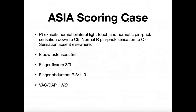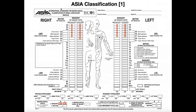This is for patients that have spinal cord injuries and we can use this system to determine what the neurological level of injury is — so what level of the spine. This is for the International Standards for Neurological Classification of Spinal Cord Injury.